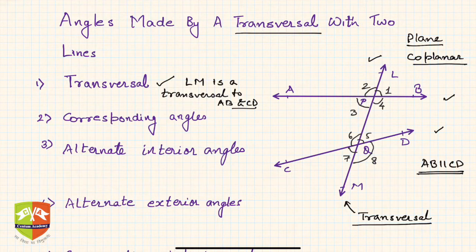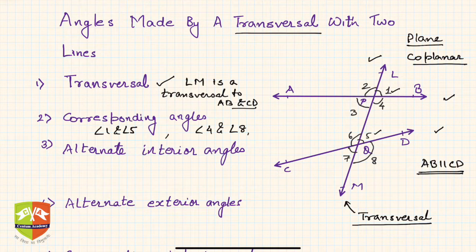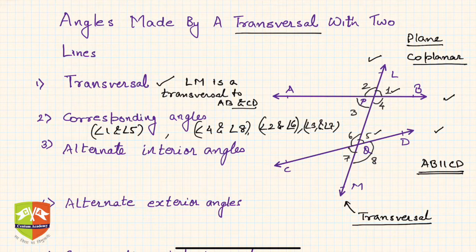For example, angle 1 and angle 5 are corresponding angles because they are on the same side — the upper-left side of both lines and on the same side of the transversal. Similarly, angle 4 and angle 8 are a pair of corresponding angles, angle 2 and angle 6 are another pair, and angle 3 and angle 7 are another pair. So there are four pairs of corresponding angles in total.